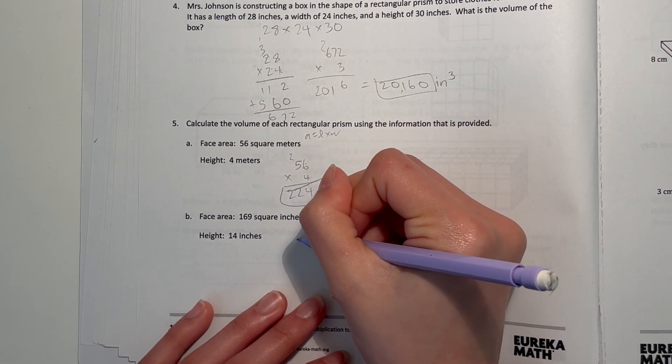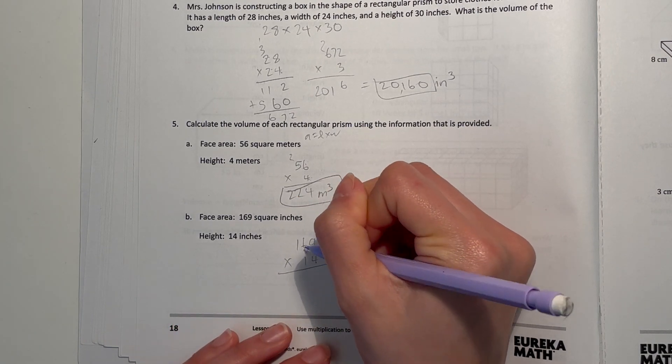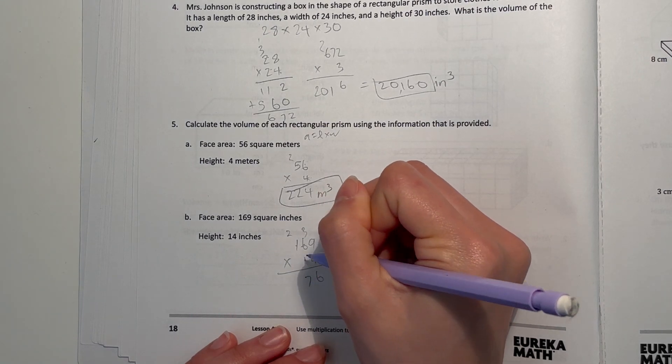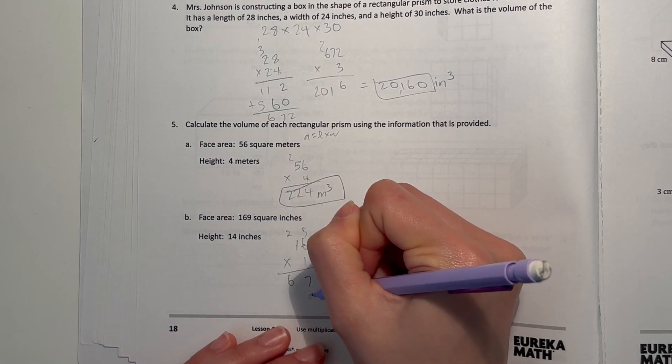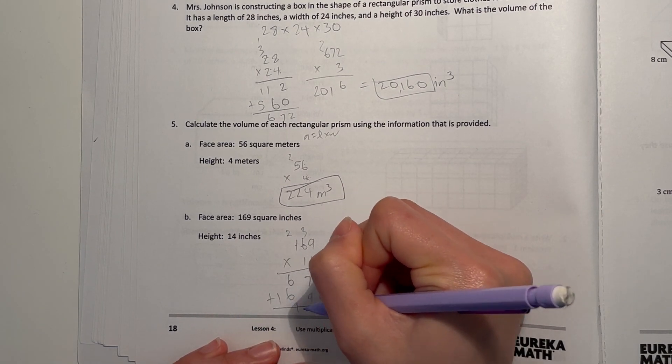And here, 169 times 14. Nine times four is 36, six times four is 24 plus three is 27, four plus two is six. Nine, add everything together, 2,366 cubic inches.